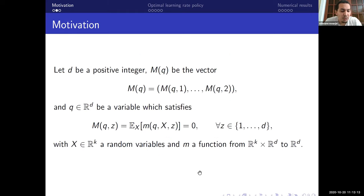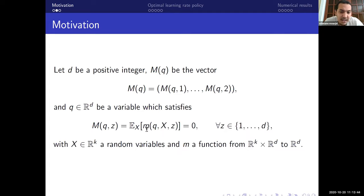We want to estimate the vector q — belonging to ℝ^d — which is the solution (zero) of a vectorial equation M(q)=0. The z-th coordinate of vector M can be written as the expected value of a cost function m, which depends on q and a random variable x. We don't know the distribution of x because the environment is unknown, and we take the expectation with respect to this random variable.